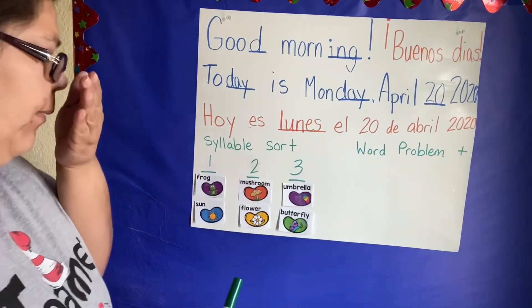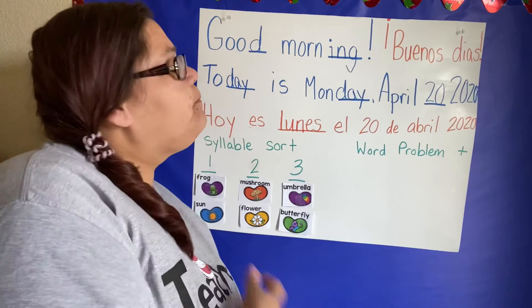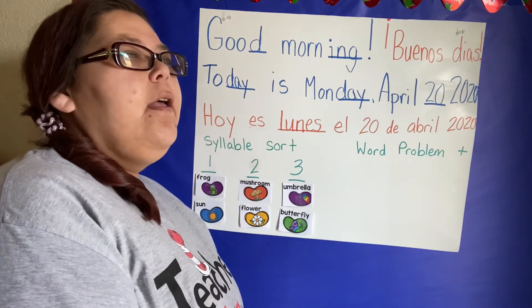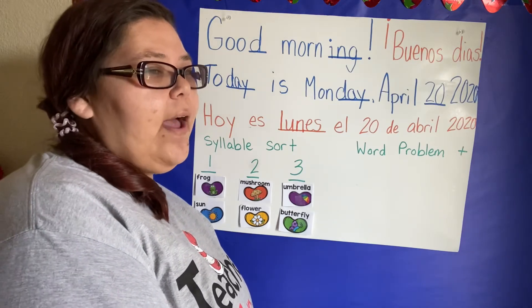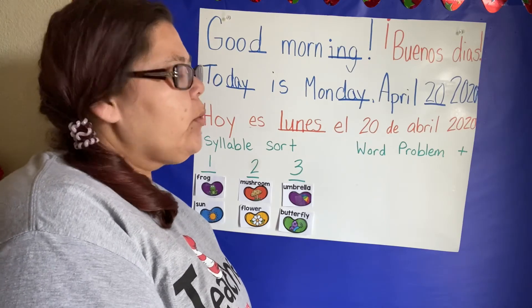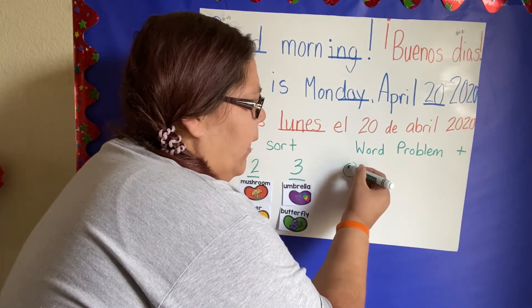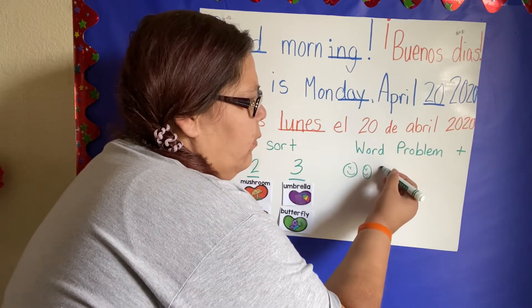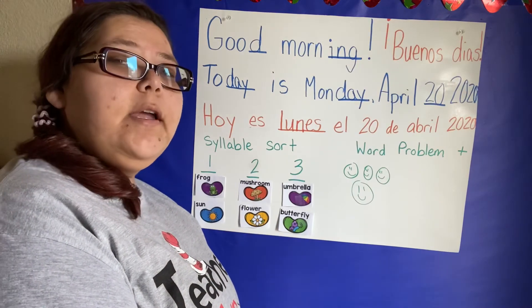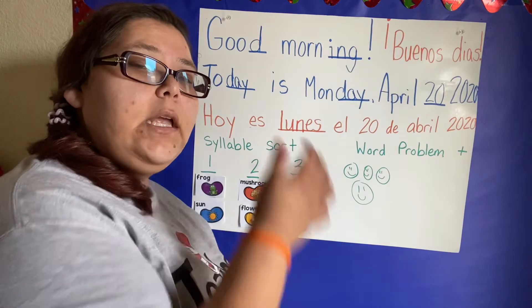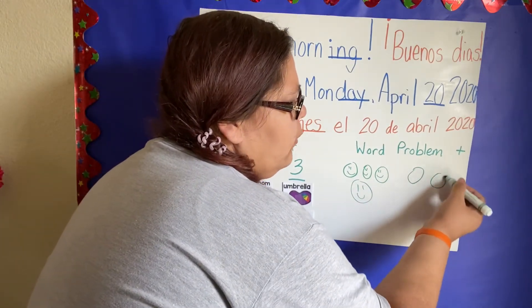Let's take a look at our word problem. We're going to listen and use a picture to solve our problem. Four kids were playing at the park. Three more kids came to play. How many kids are at the park? Let's use a picture to draw. Four kids were at the park, so I'm going to draw little smiley faces — one, two, three, four. Three more came to play, so we need to draw three more — one, two, three.